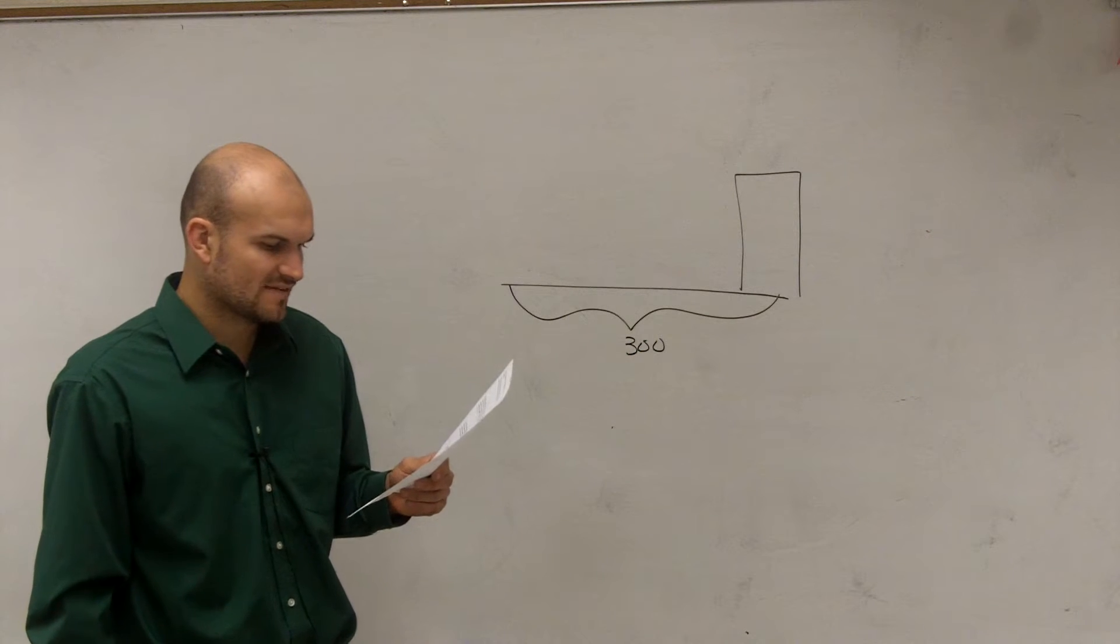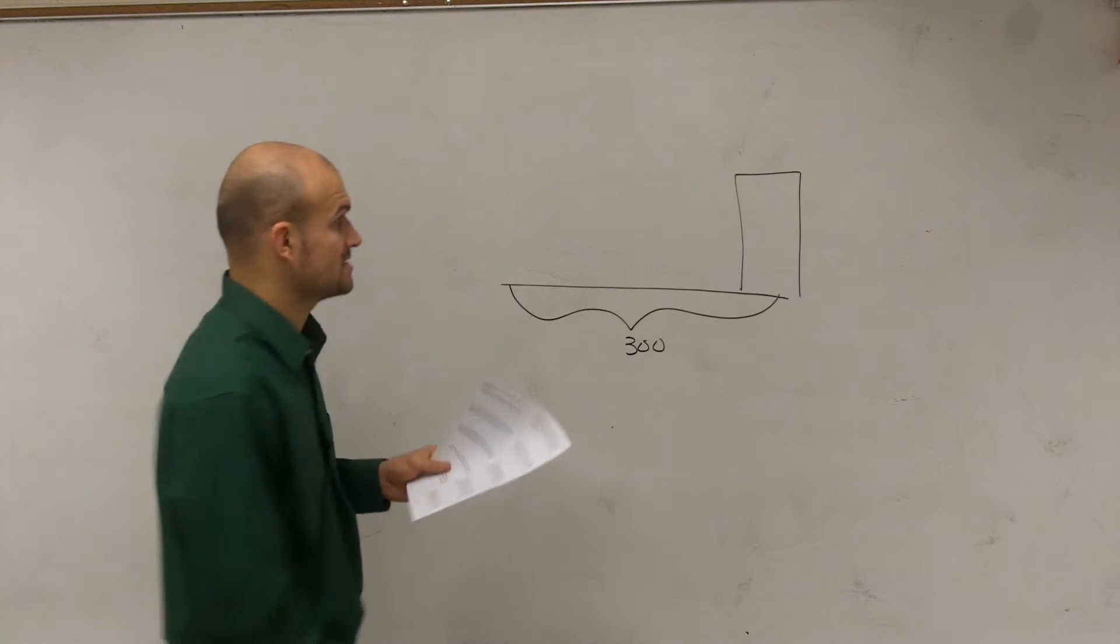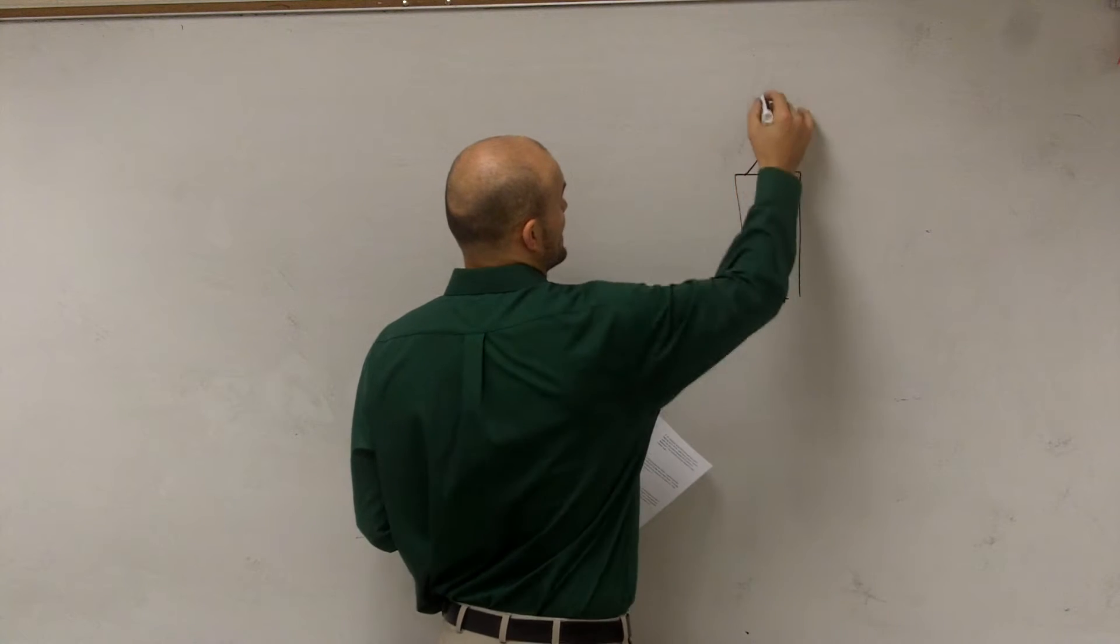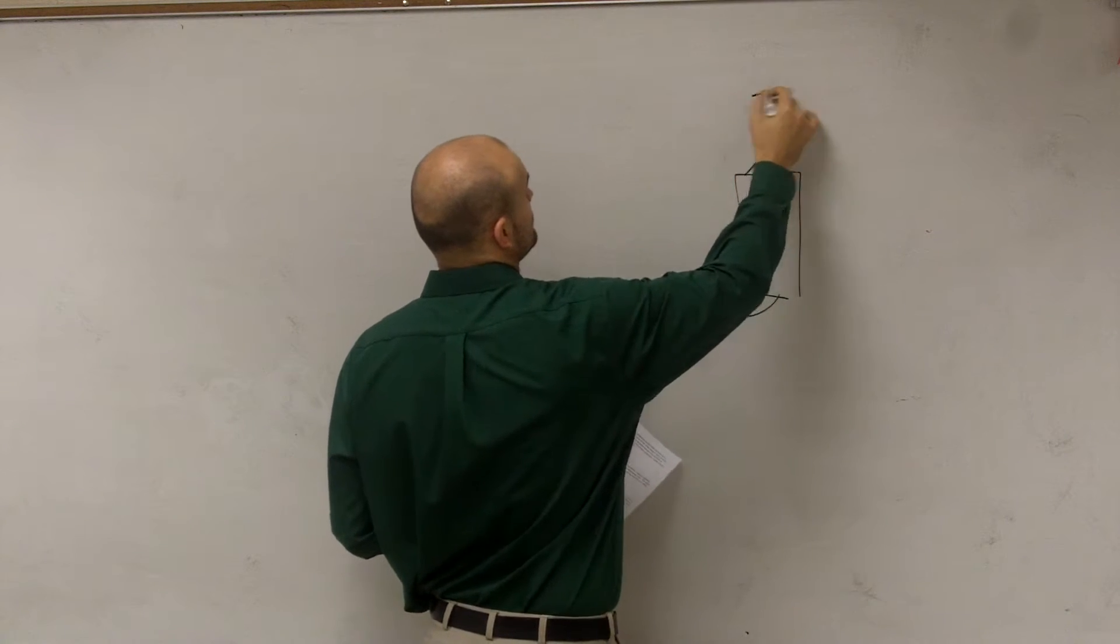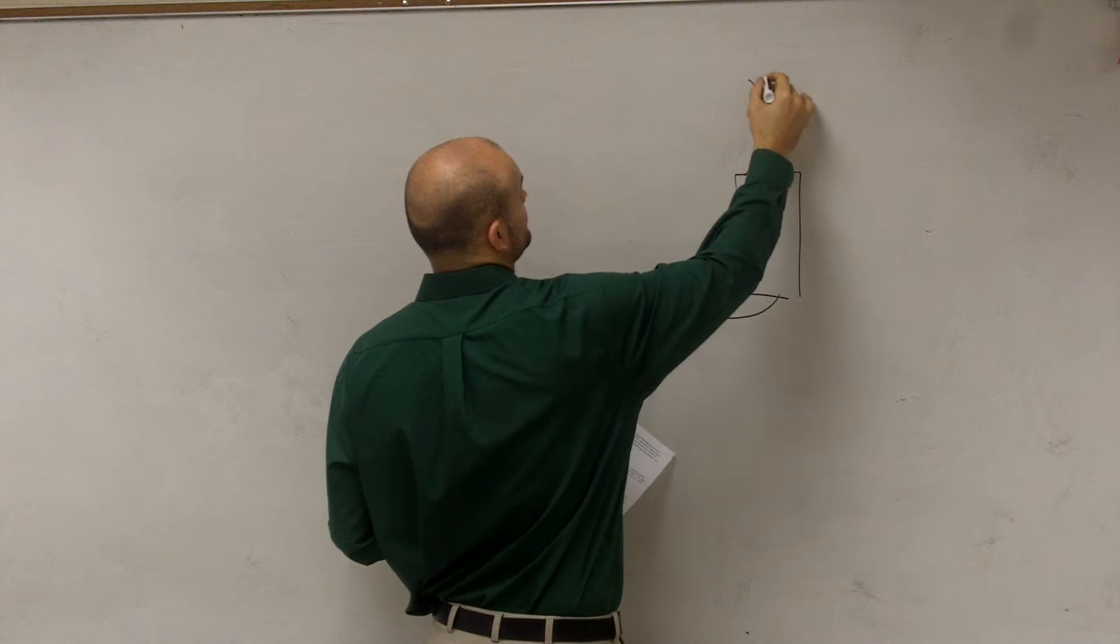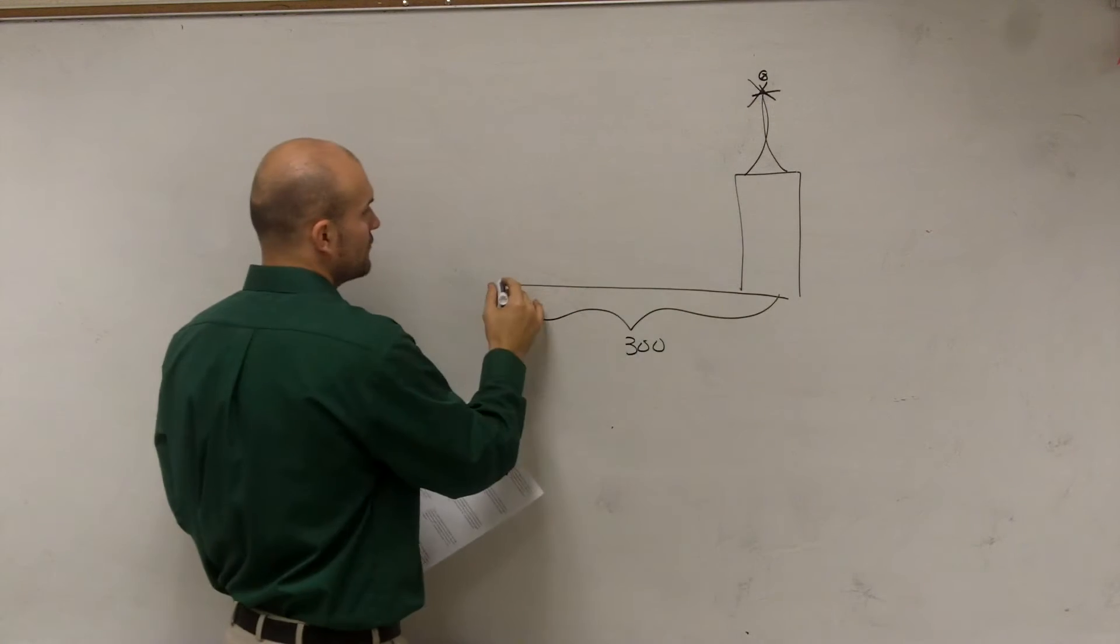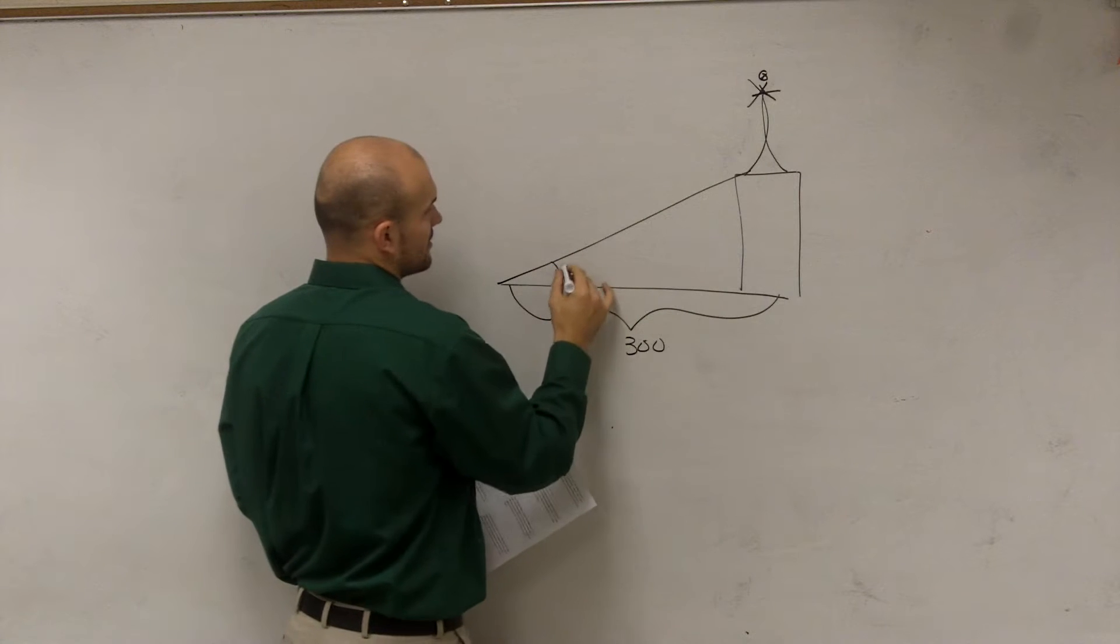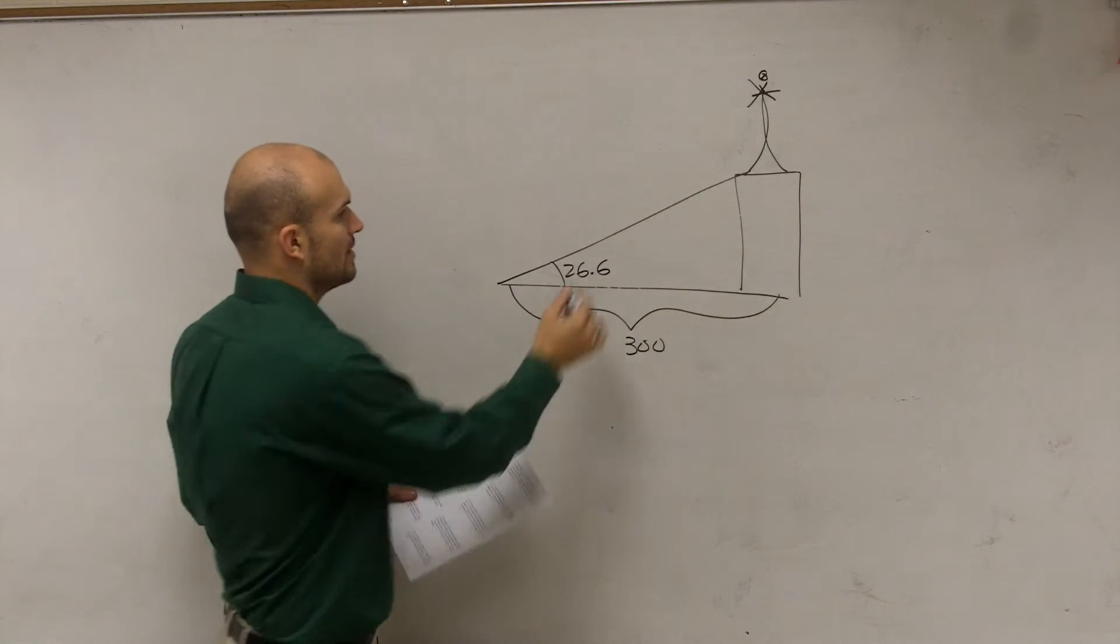The angle of elevation to the base of the antenna on the roof is 26.6 degrees. So you're going to have a little antenna. All right, and we'll adopt it. So from here to the base is 26.6 degrees, right?